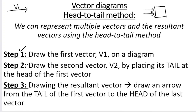Step two: draw the second vector, V2, by placing its tail at the head of the first vector. V1 is pointing to the right, and V2 is also pointing to the right, so we draw the tail of V2 at the head of V1, also pointing right. Remember to use a ruler and draw it straight. In this case we only have two vectors, but you may have three, four, or five — so you repeat step two until you are complete with all your vectors.